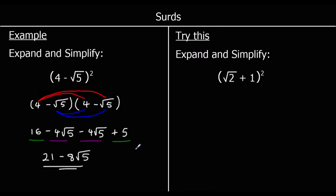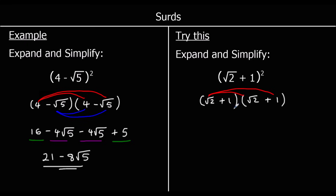So we've got root 2 plus 1 squared, which means root 2 plus 1 times root 2 plus 1. We're going to do root 2 times both the terms in the second bracket, and 1 times both the terms in the second bracket. So root 2 times root 2 is 2. Root 2 times 1 is 1 root 2, or we can just write root 2. 1 times root 2 is just root 2. And 1 times 1 is 1.